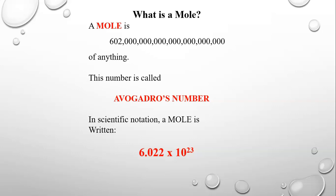Similarly, a mole represents this very long number. It could be of anything — you could have a mole of pizzas or a mole of tomatoes or a mole of anything else. However, in chemistry when we use it, we're typically referring to some sort of particle — either an atom, a molecule, a proton, or an electron.